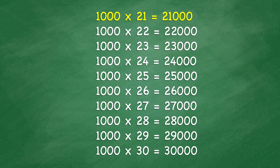1,000 times 18 equals 18,000. 1,000 times 19 equals 19,000. 1,000 times 20 equals 20,000. 1,000 times 21 equals 21,000. 1,000 times 22 equals 22,000. 1,000 times 23 equals 23,000. 1,000 times 24 equals 24,000.